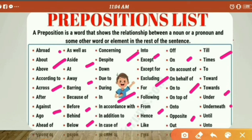The definition of a preposition is: a preposition is a word that shows a relationship between a noun or a pronoun and some other word or element in the sentence.